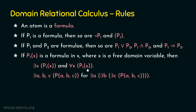We can also write: there exists a, b, c such that predicate(a, b, c) is true, which can equivalently be written as there exists a (there exists b (there exists c, predicate(a, b, c) is true)). So we are done with the basics and rules of domain relational calculus. Before we finish, let's look at the safety of expressions, just as we did in tuple relational calculus.